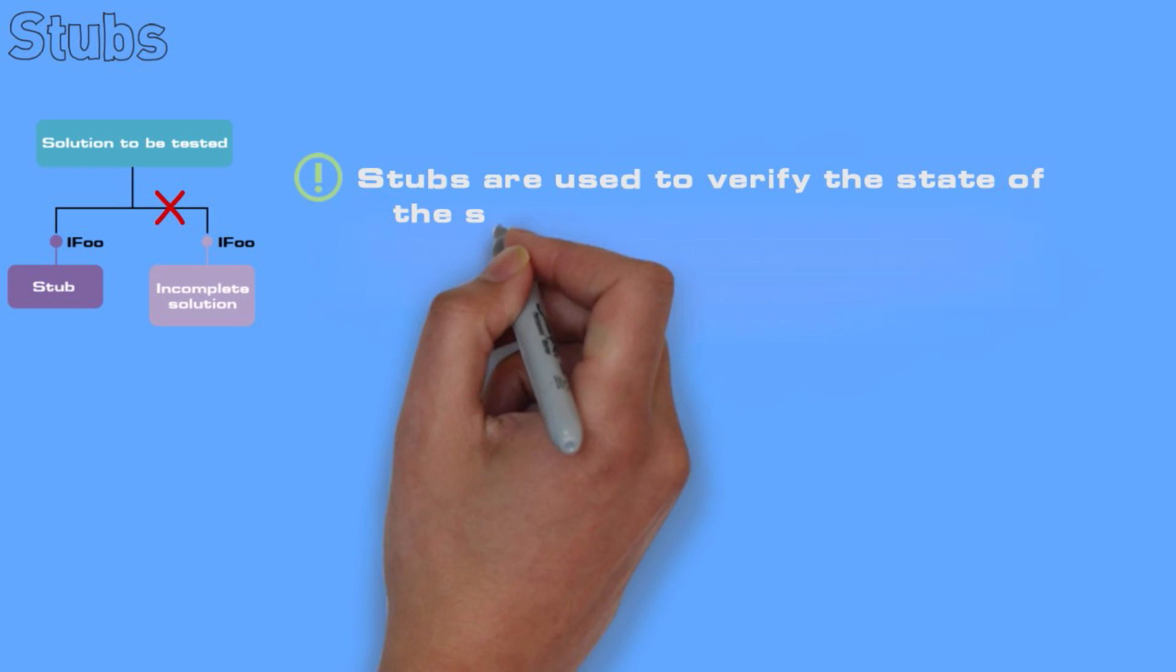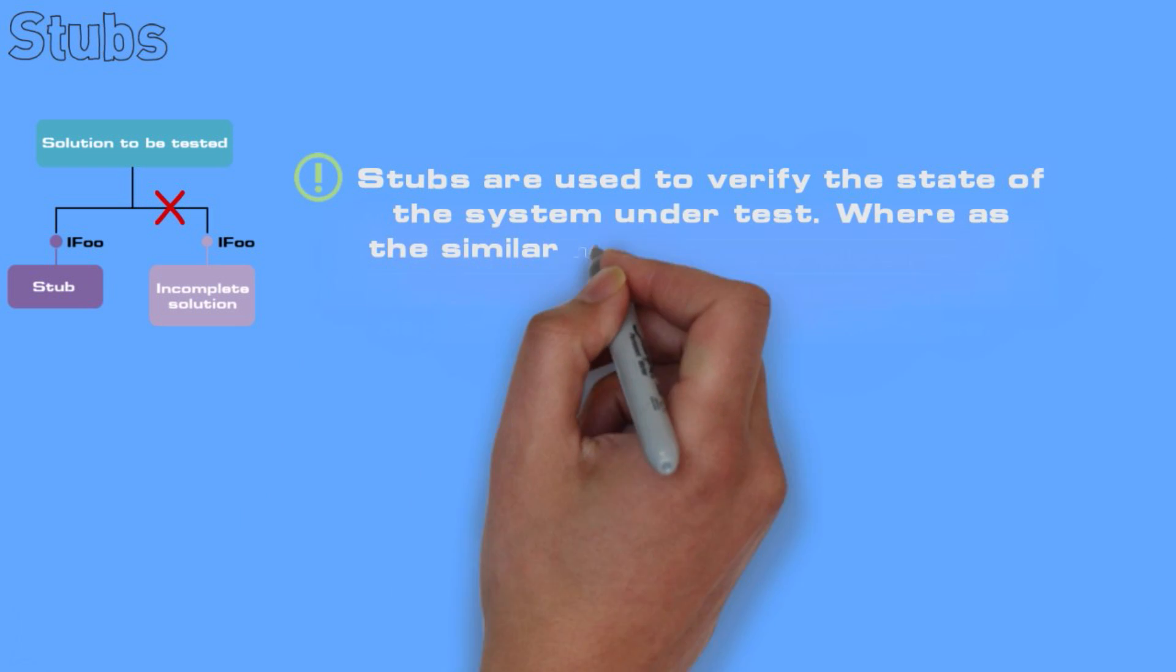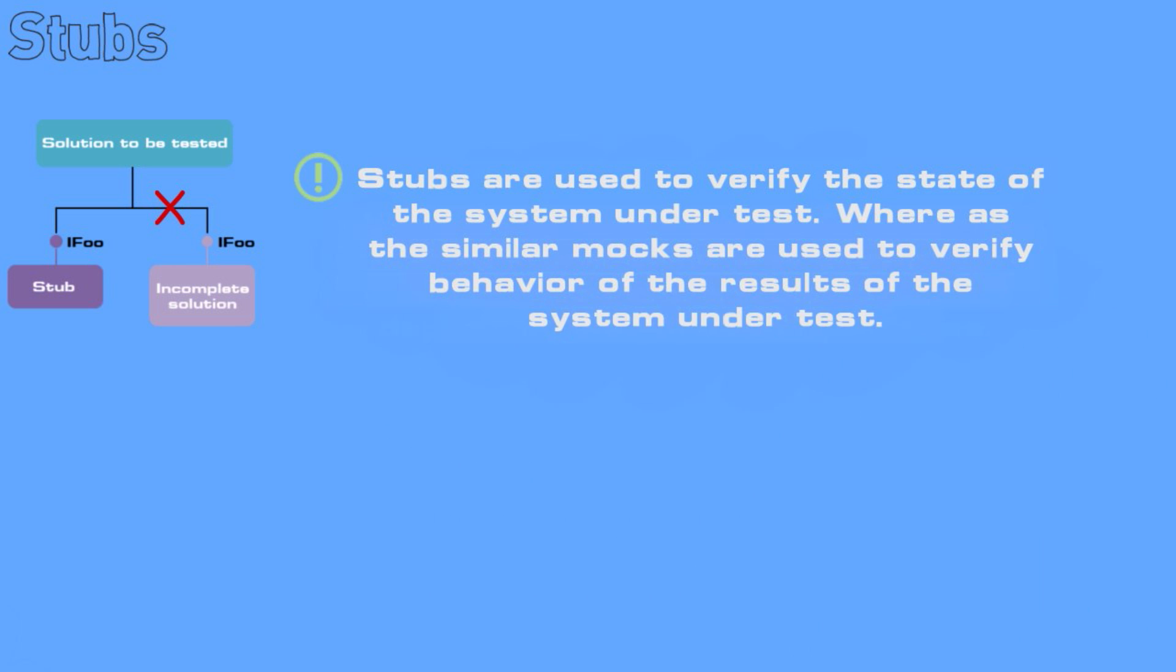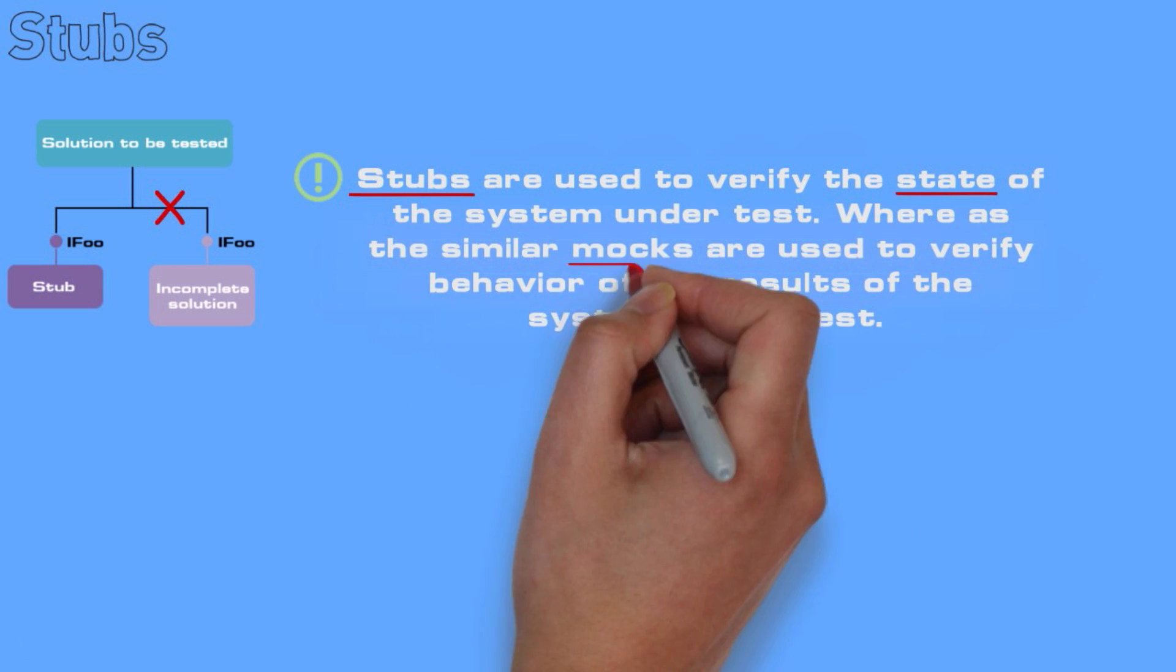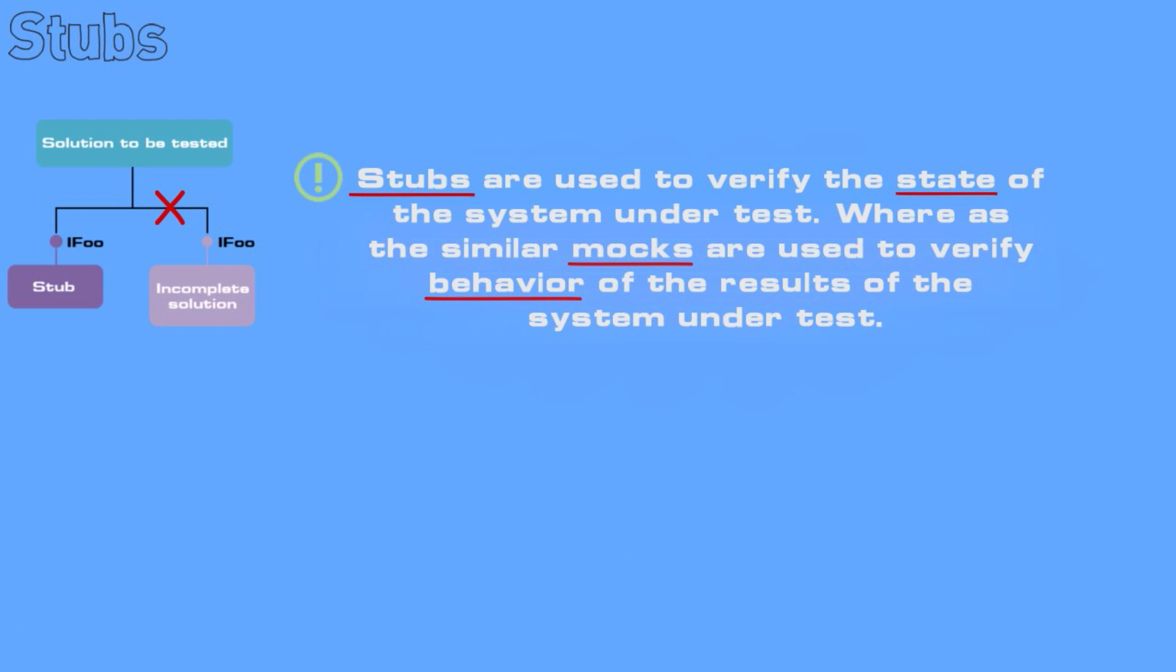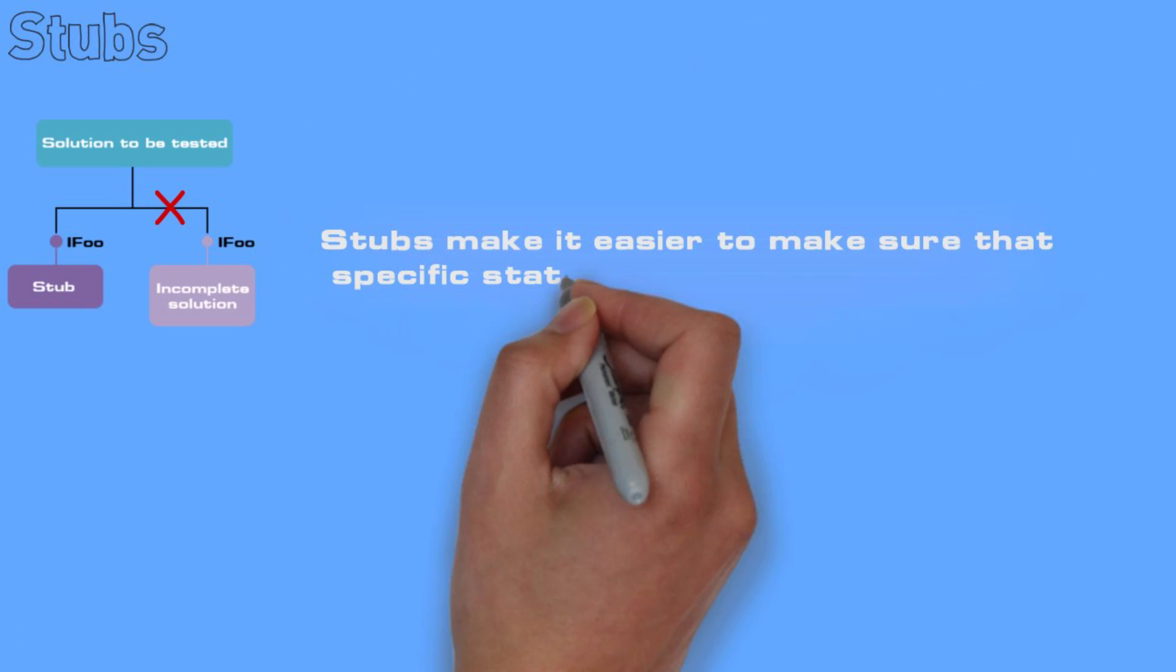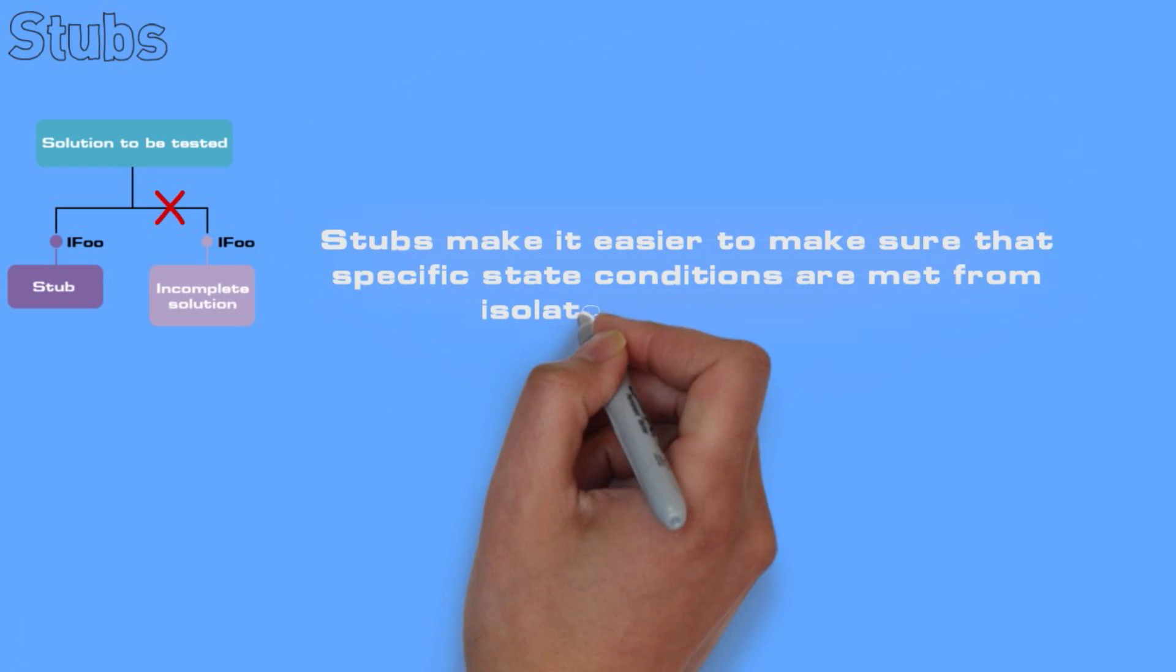Stubs are used to verify state of the system under test whereas the similar mocks are used to verify behavior of the results of the system under test. Stubs make it easier to make sure that specific state conditions are met from isolated dependencies.